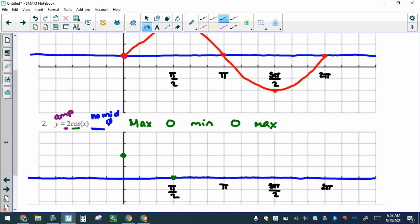And then 0, which means on the midline. Minimum means 2 below because of that amplitude. 0 means on the midline. And then maximum again says 2 above. And so here is the cosine graph.